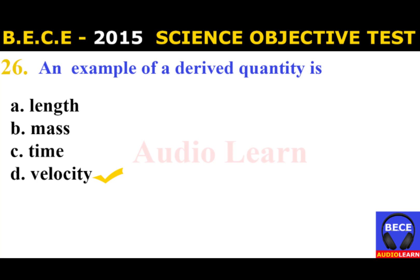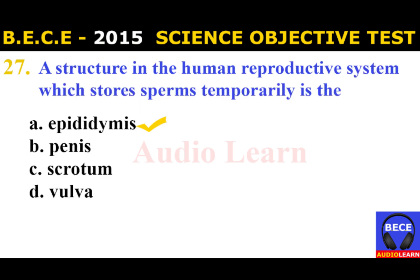Number 26: An example of a derived quantity is A. Length, B. Mass, C. Time, D. Velocity. The answer is D. Velocity. An example of a derived quantity is velocity.